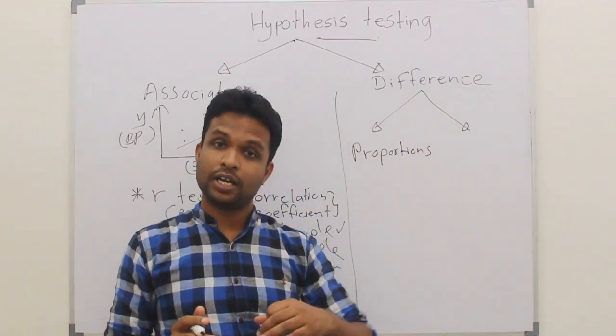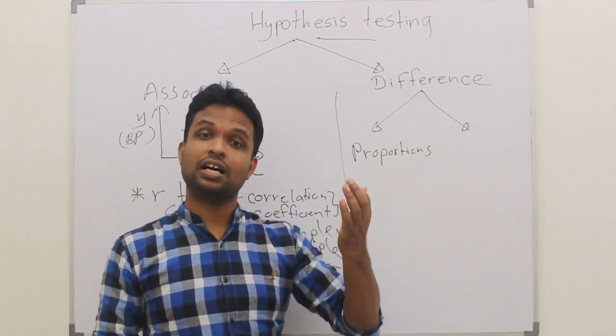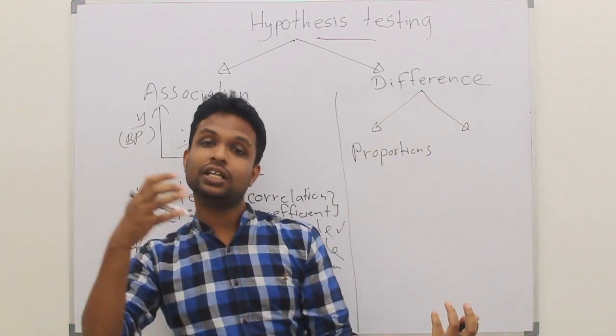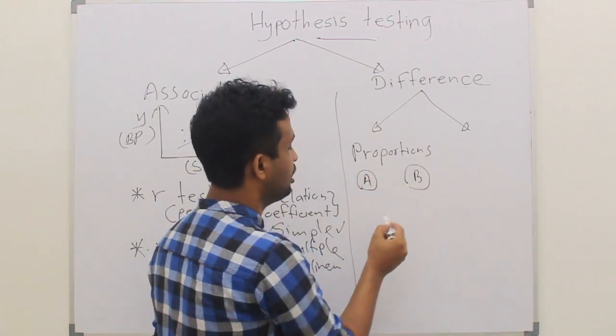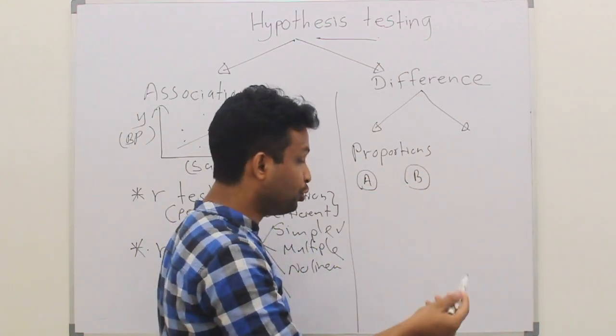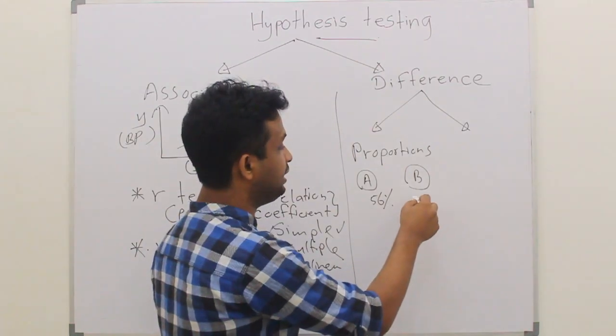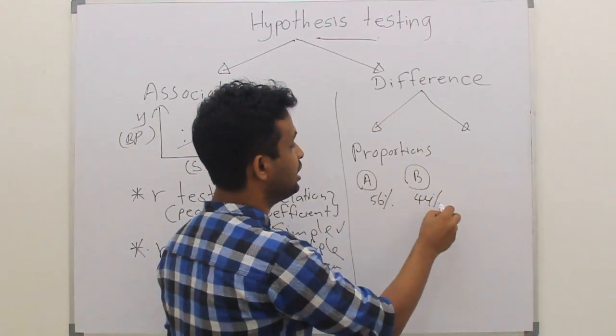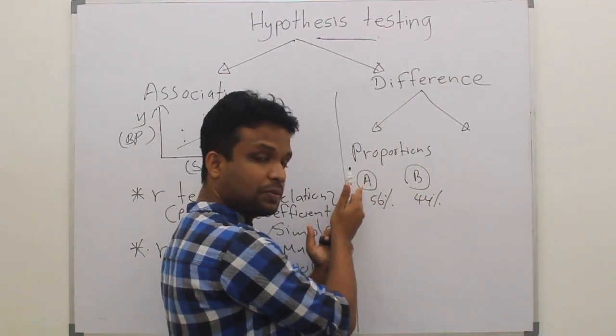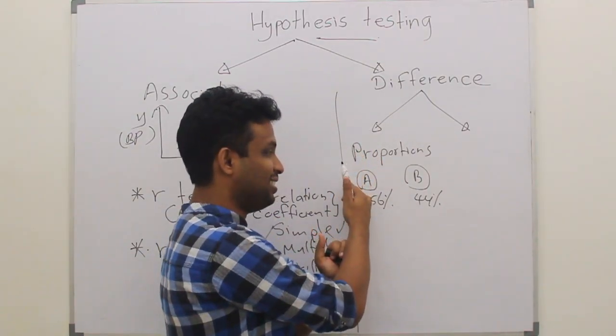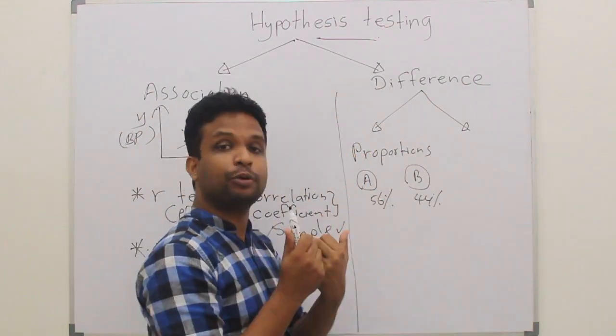What do you mean by the difference of proportions? You are testing whether the smokers are higher in community A or in community B. So we have two communities A and B and we can take the proportions like 56% in population A and 44% in population B. Whether there is a significant difference between the smokers' proportion of population A versus population B. That is what is meant by the difference of proportions.